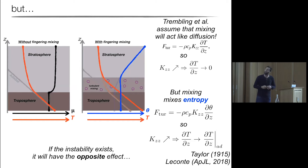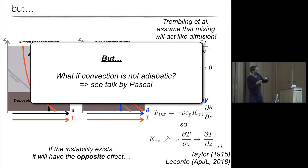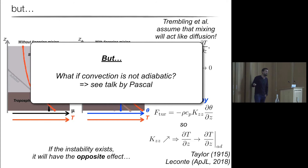However, Pascal has worked a lot on this and I think has actually found a way to make it work — if convection is not adiabatic but has a source of energy, in this case I think radiation powering the convection. And I hope that's a good transition to the next talk. Thank you and I'll take your questions.